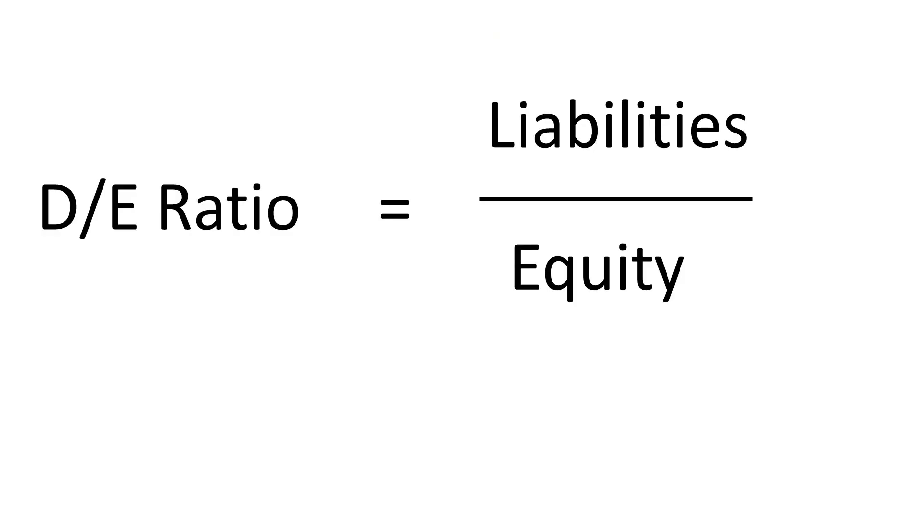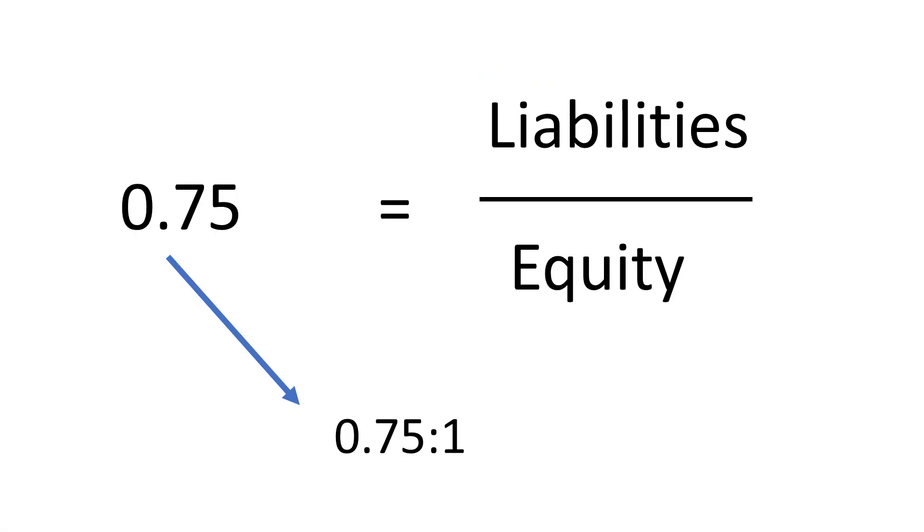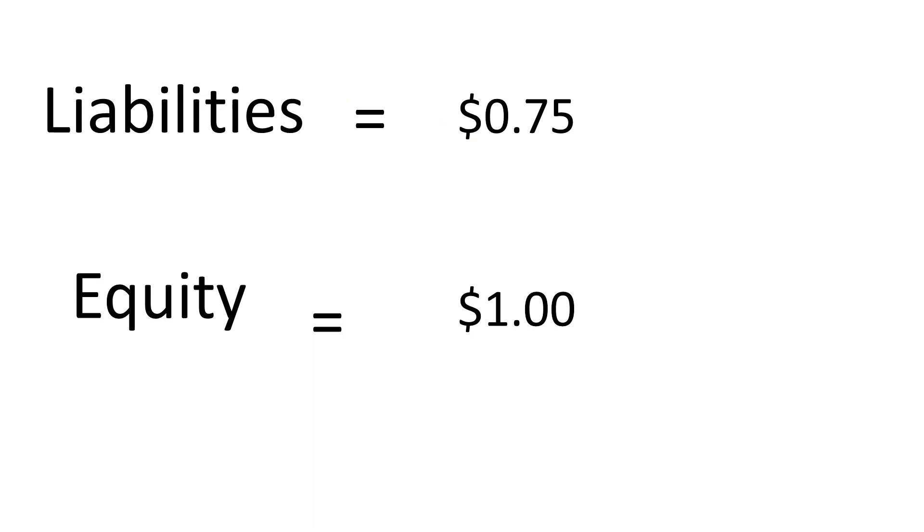Here is the debt-to-equity ratio, or the liabilities-to-equity ratio, because liabilities means debt and equity means net worth. If hypothetically we have a number, say 0.75 — so if the debt-to-equity ratio is 0.75 to 1 — that means for every 75 cents of liabilities, this business has a dollar in net worth. Every 75 cents in debt, we have a dollar of equity. We can look at this and without knowing the actual real numbers, we can say they've got 75 cents in debt and a dollar in equity.